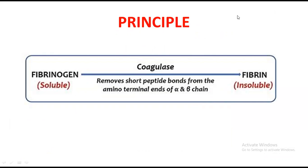When our unknown bacteria is producing an enzyme known as coagulase, it can convert the fibrinogen present in the serum into fibrin. The serum can be from a rabbit or other animals — rabbit serum is the most suitable — but you can also take it from a patient. If our bacteria has coagulase, it will convert fibrinogen into fibrin, and that fibrin then performs clotting. This is the basic principle: the bacteria is coagulase positive.